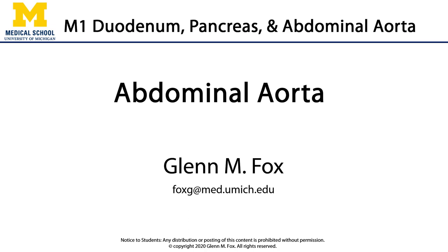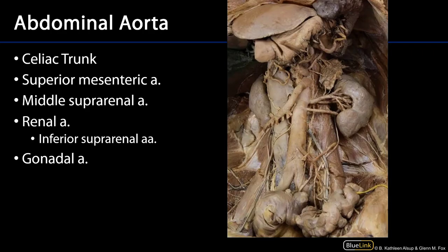Let's talk about the abdominal aorta and its branches. Here we're looking at the abdominal aorta and very many of its branches. We can see the lateral borders of the abdominal aorta transitioning down at about L4 into the common iliac arteries. The abdominal aorta is a retroperitoneal structure found left lateral to the inferior vena cava.